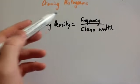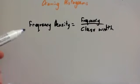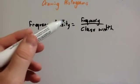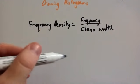What we're going to do is we're going to now look at drawing histograms. So here we've got an important formula whenever you're drawing histograms. It's frequency density equals frequency divided by class width.